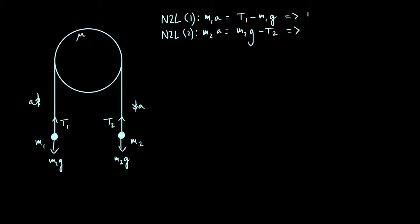To make the tension the subject, so the top one gives us t1 is equal to m1a plus m1g. The second equation gives us t2 is m2g minus m2a.